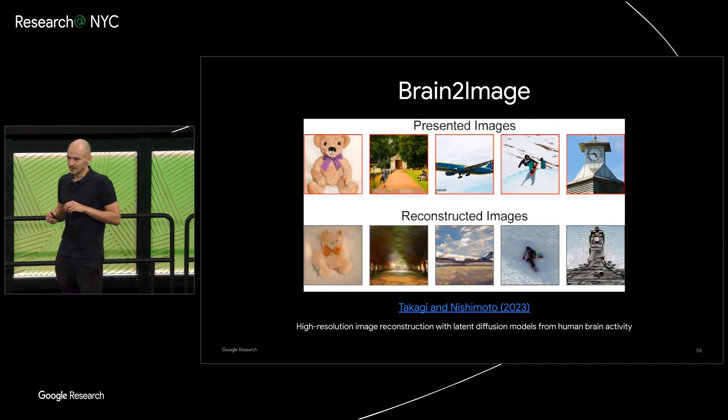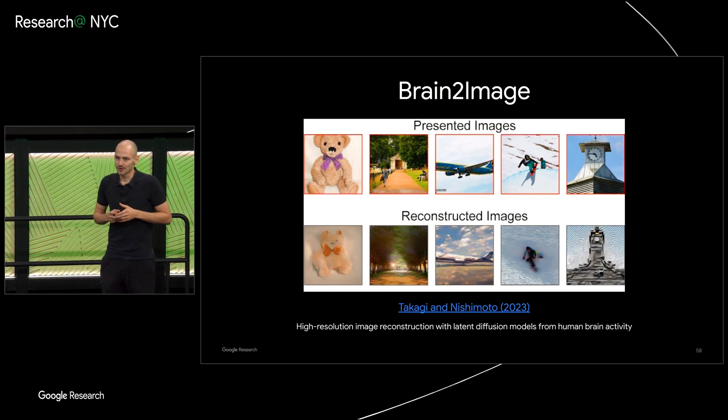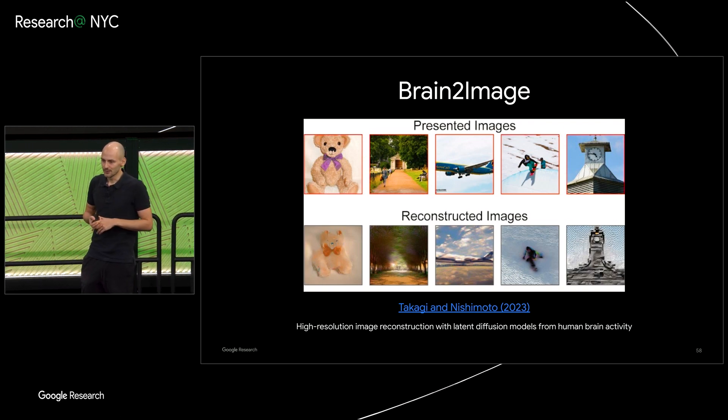Later they use the brain activity that's recorded to reconstruct the images that you saw, and you see in the bottom row the image reconstructions. This was enabled by really capable image generation models — the stable diffusion one in that case — coming into the hands of the neuroscientists.